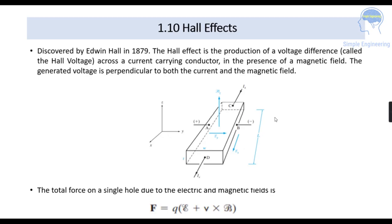Hall effect. It is discovered by Edwin Hall in 1879. So the Hall effect means it is a production of a voltage difference. That voltage difference is called Hall voltage. And that voltage difference across a current carrying conductor in the presence of a magnetic field. And there will be a voltage that is generated which will be perpendicular to both the current and the magnetic field.